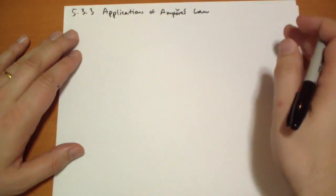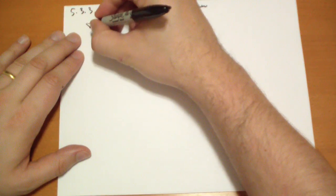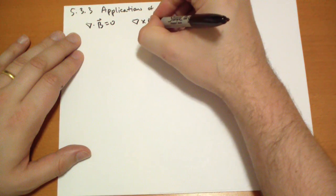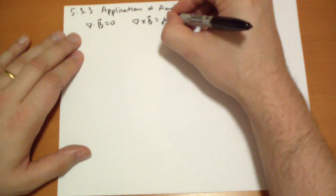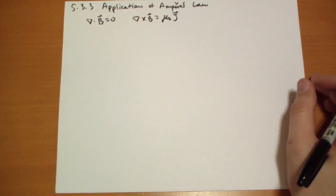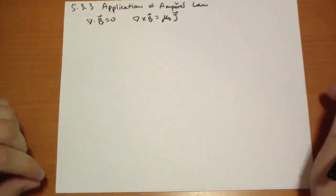We calculated that the divergence of B first of all is 0. The curl of B, however, is equal to mu-naught times the volume current at the point in question. Okay?